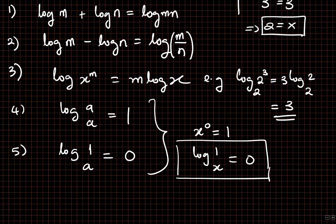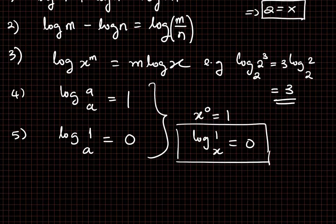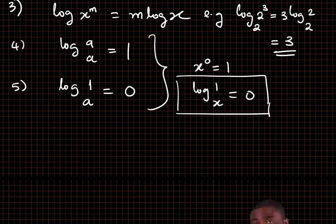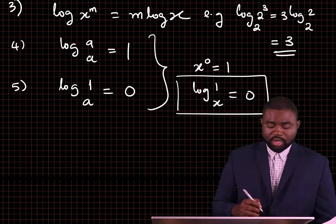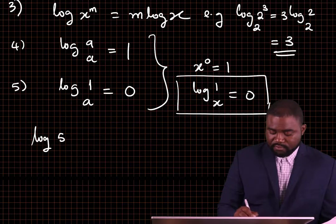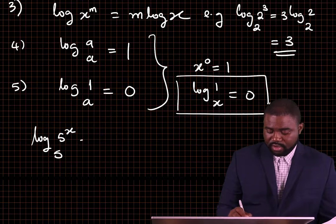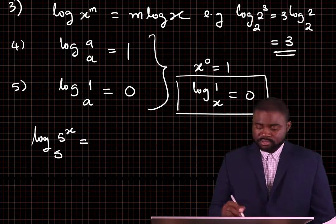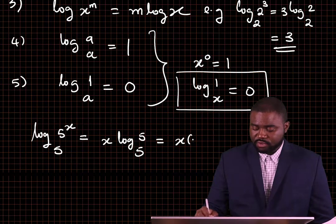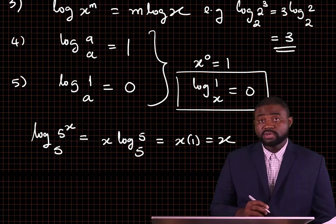These are some of the basic laws of logarithms. We are going to spend some time doing examples so that you should be able to utilize these properties in simplifying your answers. For example, the log of 5 raised to the power x, base 5, is the same as x log 5 base 5, which is going to be equal to x multiplied by 1, which is just equal to x.